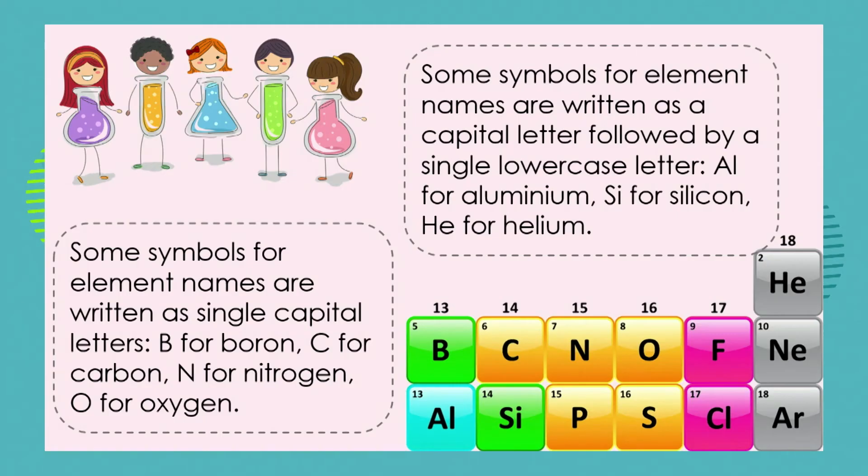Now in science, you will discover that there are lots of rules for the way we write certain things. We need to understand that we can't break those rules — sometimes we have to change our style of handwriting in order to follow the rules of science. Because if we break those rules, we are not going to be understood by other scientists. So there are rules associated with how we write the symbols for the elements on the periodic table, and you have to follow the rules.